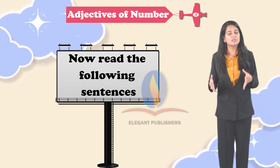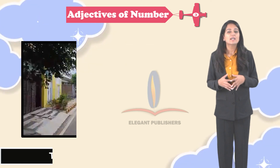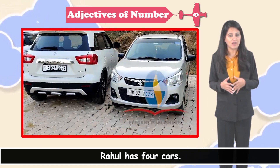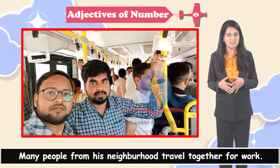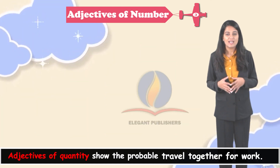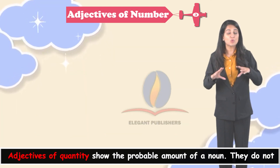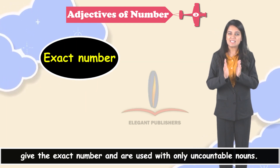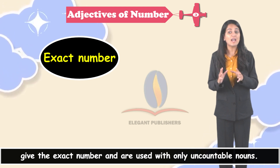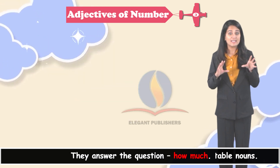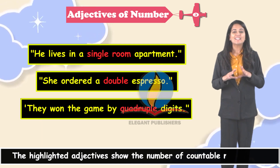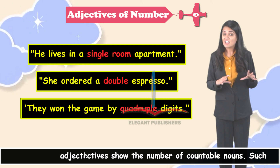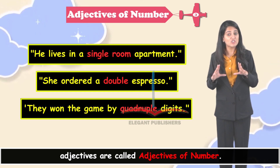Adjectives of number. Now read the following sentences. The second house in the lane is Rahul's house. Rahul has 4 cars. Many people from the neighbourhood travel together for work. The highlighted adjectives show the number of countable nouns. Such adjectives are called adjectives of number.